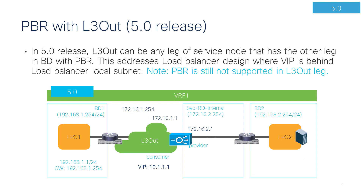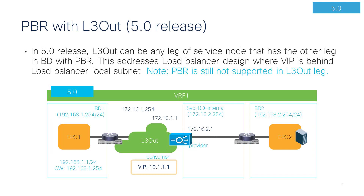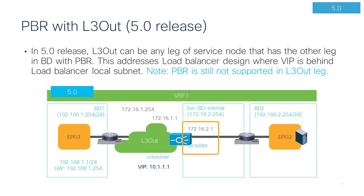Starting from 5.0, this limitation was also lifted. Any interface can be in an L3 out if PBR is not enabled on that interface. This is useful for a load balancer use case. For example, traffic from EPG1 to VIP doesn't need PBR because traffic is destined to a VIP owned by the load balancer. If the VIP is behind the load balancer interface IP, we need an L3 out to add the route to that VIP. If the load balancer doesn't use source NAT, PBR is required on the provider side for return traffic. In this case, the consumer side of the load balancer is in an L3 out, whereas PBR is enabled on the provider side. The key point is that PBR destination still needs to be in a bridge domain, not in an L3 out — that's the limitation prior to 5.2.